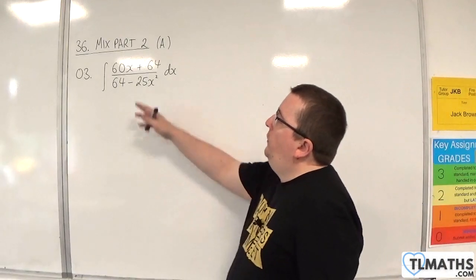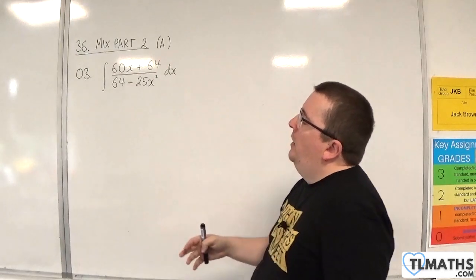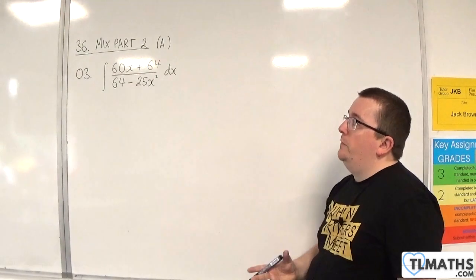So, for number 3, we've got the integral of 60x plus 64 over 64 take away 25x squared.